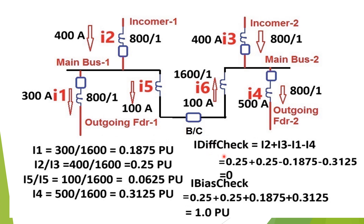The differential current for the check zone = i2 + i3 − i1 − i4 = 0.25 + 0.25 − 0.1875 − 0.3125 = 0. The bias current for the check zone = scalar sum of the four currents = 0.25 + 0.25 + 0.1875 + 0.3125 = 1.0 pu. This is how the bias current and differential current are calculated for a bus bar protection relay.